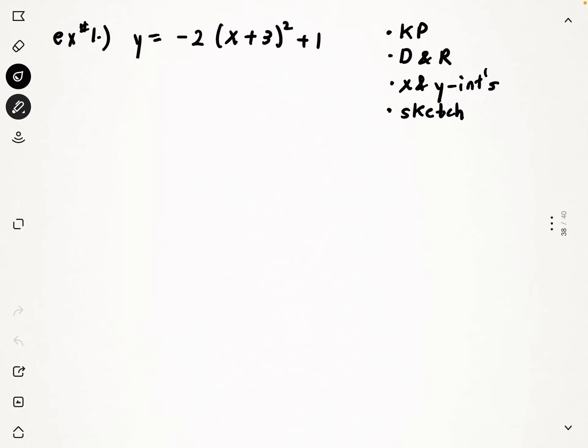On the side here I'm asking you to get the key point, which I've abbreviated because of course I did: KP, domain and range D and R, x and y intercepts, and we're going to sketch the graph. Now what I like to do is I like to do a mapping notation first, then get the key point, then sketch a graph, then get the domain and range, get the x and y intercepts.